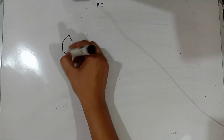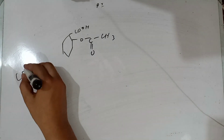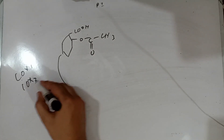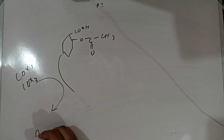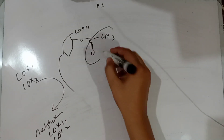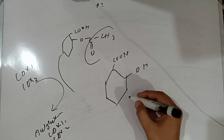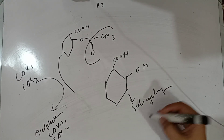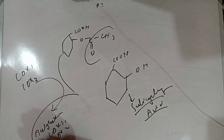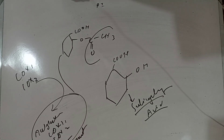Aspirin inhibits COX-1 and COX-2 through acetylation. The structure of aspirin has a carboxylic acid group and an acetyl group (O-CO-CH3). Aspirin performs acetylation of COX-1 and COX-2 — COX-1 becomes acetylated and COX-2 becomes acetylated. The acetyl group is removed from aspirin and transferred to COX-1 and COX-2, rendering them inactive. Aspirin is thus converted to salicylic acid in this reaction.